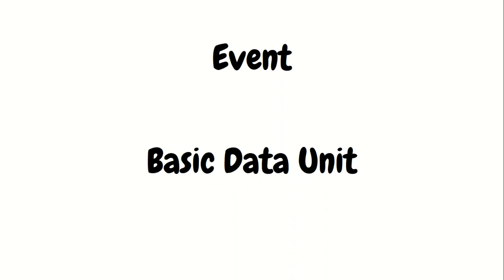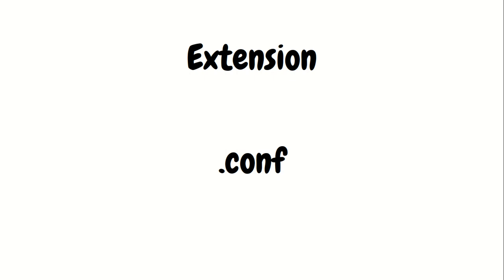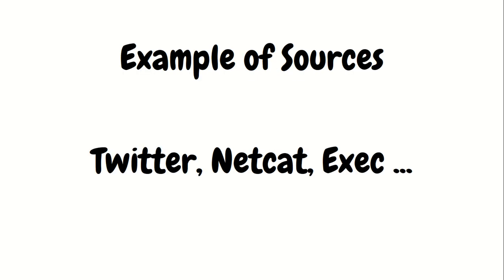What is an event? It's a basic data unit that we use in Apache Flume. What is the file extension? Since we have to work with configuration files of Apache Flume, the extension is .conf. What are the different types of sources available? We have a long list, but three examples are: Twitter, Netcat, and EXEC as sources.